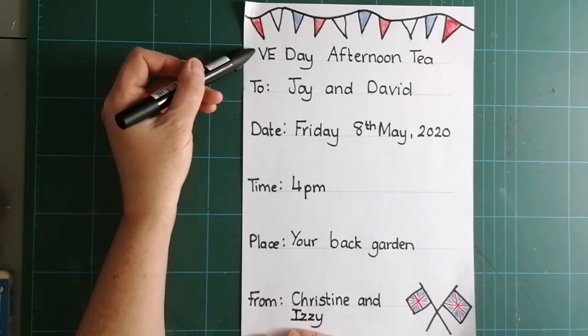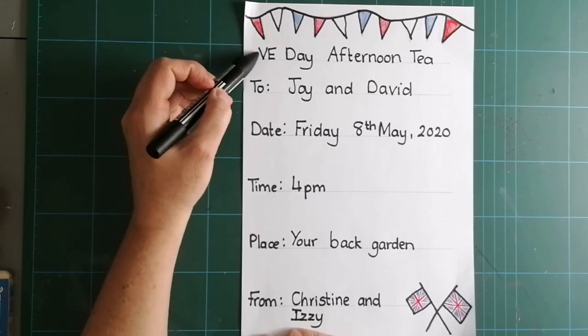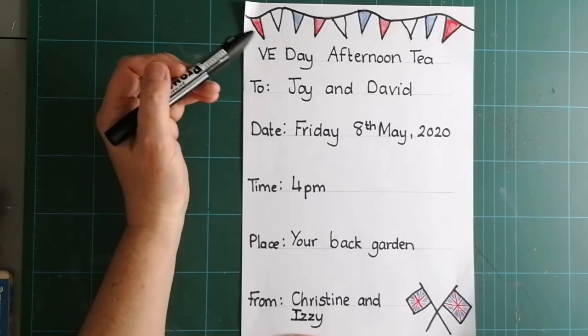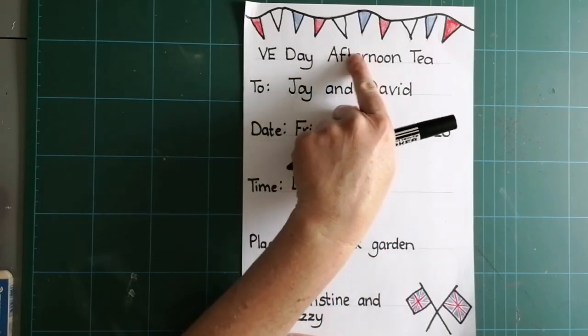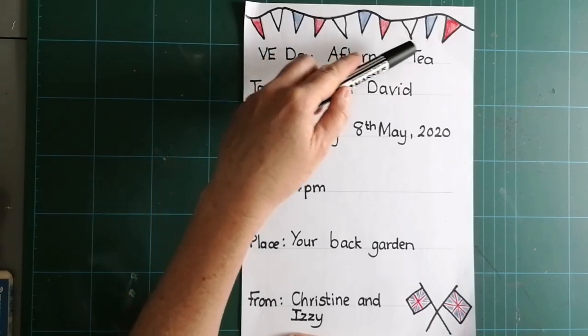So, I've told them what sort of event it is. So, they know not to wear their swimming costumes, or they don't know not to wear their ball gowns, don't they? Because, if you were having a swimming party, if you didn't put a swimming party at the top, people wouldn't bring their costumes, would they? So, VE Day afternoon tea.